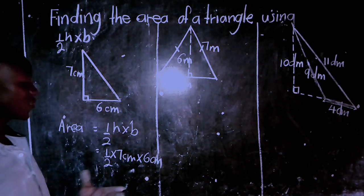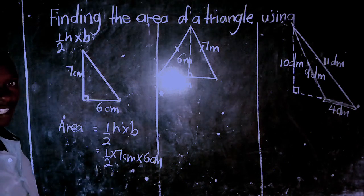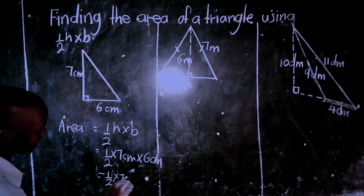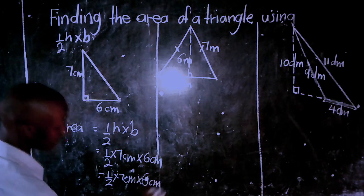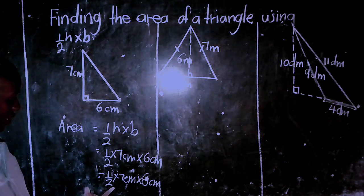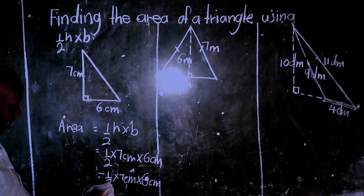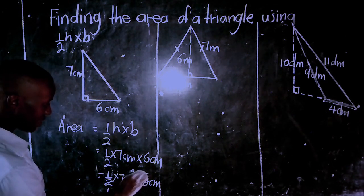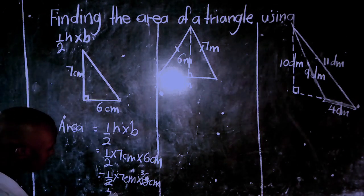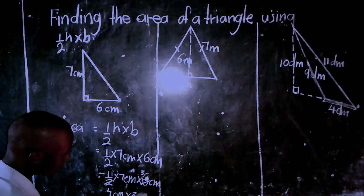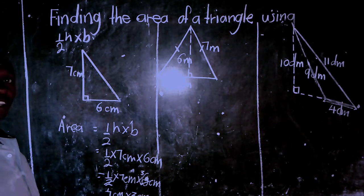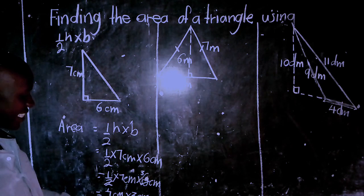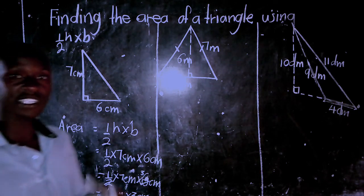The next step is to cancel out or solve it mathematically. I have a half times 7 centimeters times 6 centimeters. Which number can divide 2? It is 6. So 6 divided by 2 gives me 3. I now have 7 centimeters times 3 centimeters. What is 7 times 3? 7 times 3 is 21. So the area is 21 centimeters squared — because centimeter times centimeter gives centimeters squared.